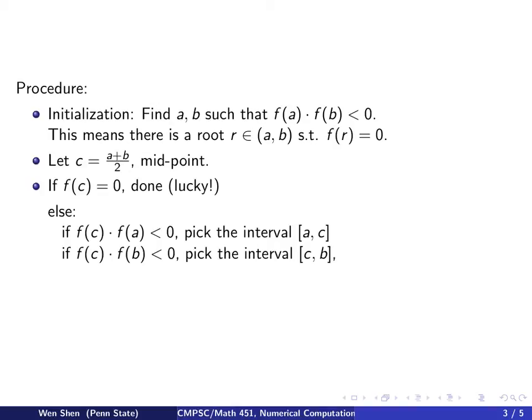If f(c) is not 0, then we know that since f at a and f at b are of opposite sign, f(c) would be having opposite sign with one of them. So two cases: if f(c) has opposite sign of f(a), then we know there is a root between a and c, and we would pick this interval ac. And also if f(c) has opposite sign with f(b), then we know there is a root on the interval from c to b, and then we'll pick that interval cb. So whichever interval you picked will be the new interval for you to start with, and we will iterate the procedure until some stop criteria is satisfied.